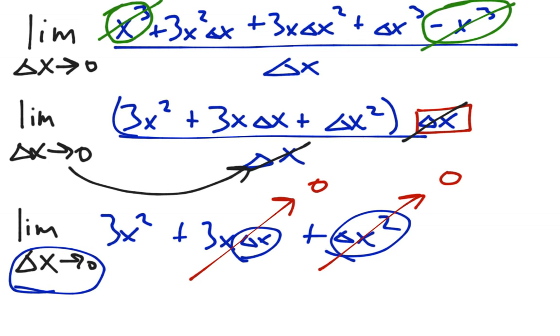Hey, and what are we left with? There it is, 3x squared, which is what we started with. And so we've shown, using the limit definition, that the derivative of x cubed is indeed 3x squared.